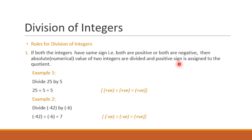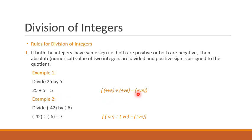Let's see with the help of few examples. Divide 25 by 5. Here both the numbers are positive, so 25 divided by 5 will give me 5. So a positive number divided by a positive number gives the answer as a positive integer.